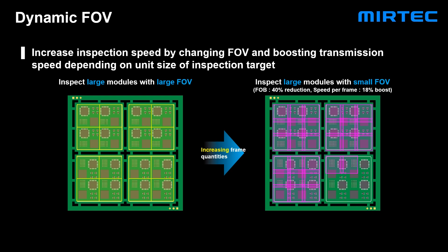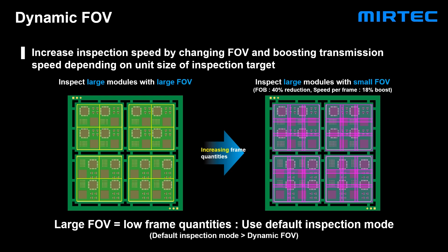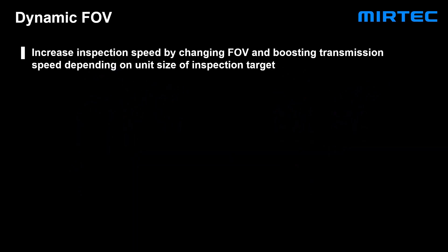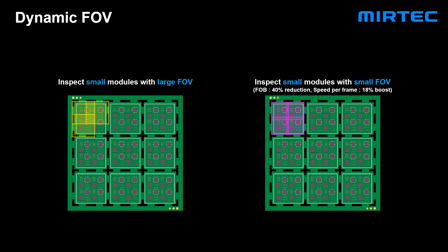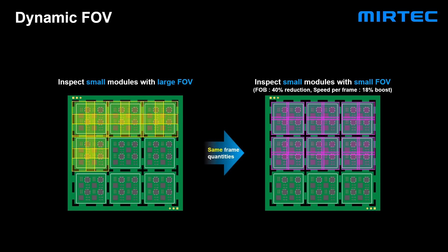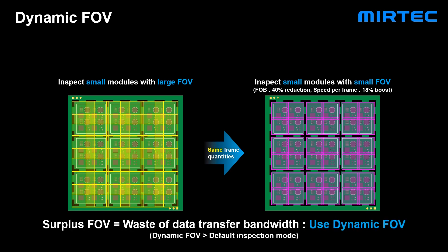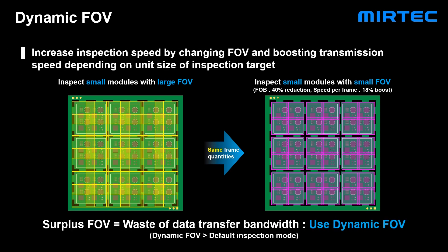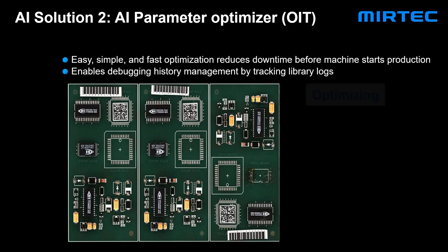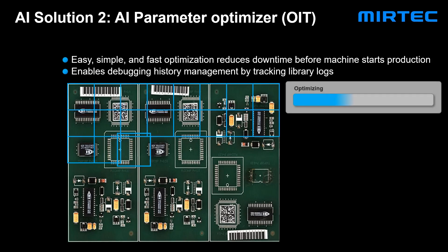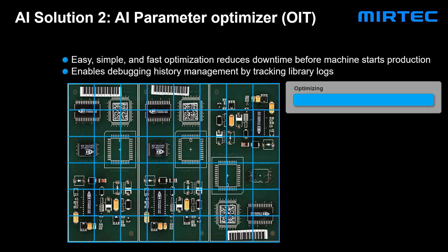The third thing I want to talk about today is programming, because you've optimized the system in a way where it doesn't have to take into account areas that don't need to be inspected. Every board has breakout areas or areas without a density of components, so you don't need to inspect everywhere. We were proud to show at Apex our first top speed mode — speed level one — where we enhanced the inspection speed at the software level.